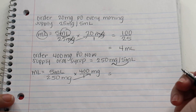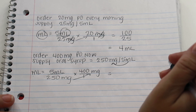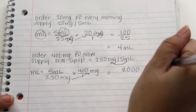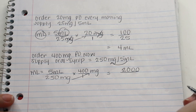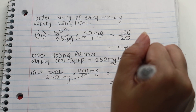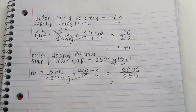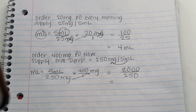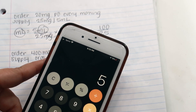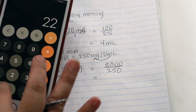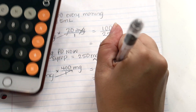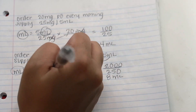Multiply across: 5 milliliters times 400 equals 2000, and 250 times 1 is 250. Let me verify — 400 times 5 is indeed 2000. Then divide 2000 by 250, which equals 8. Our unit is milliliters since the milligrams cancel out, so the answer is 8 milliliters.